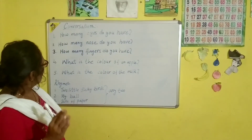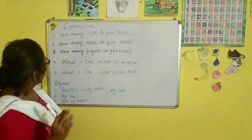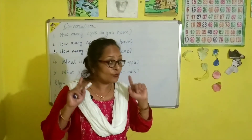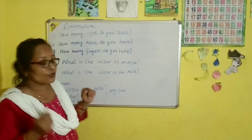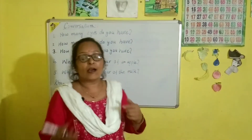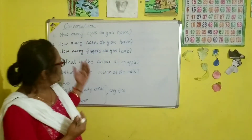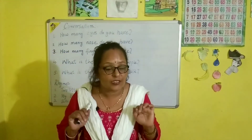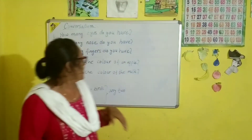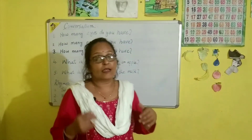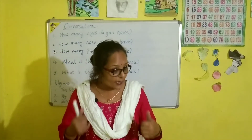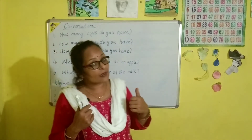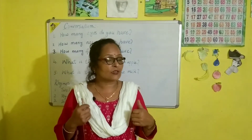Now I am going to repeat it. How many eyes do you have? I have two eyes. How many nose do you have? I have one nose. How many fingers do you have? I have ten fingers. What is the color of an apple? The apple is red. What is the color of the milk? The milk is white.